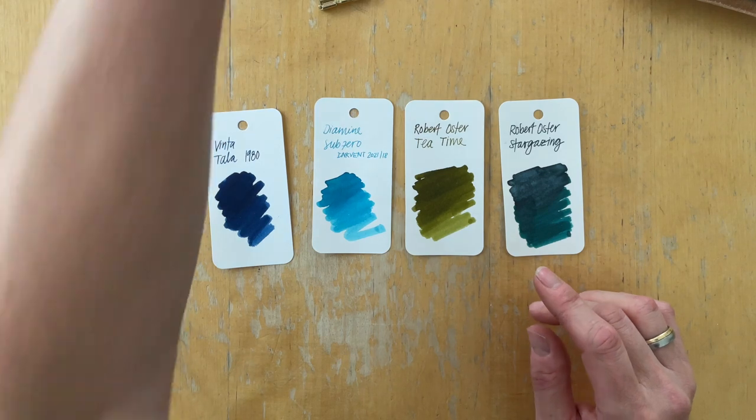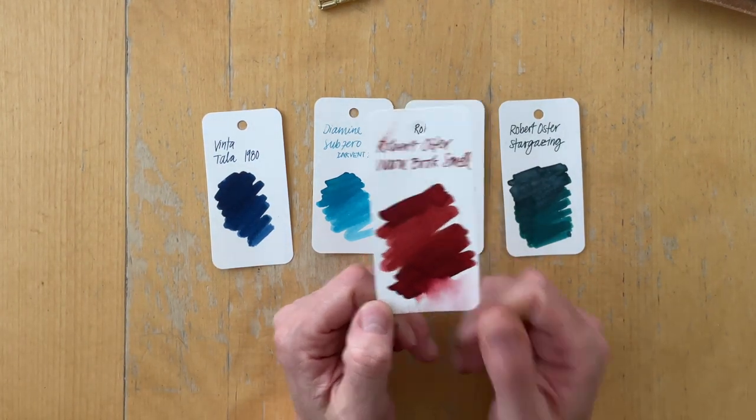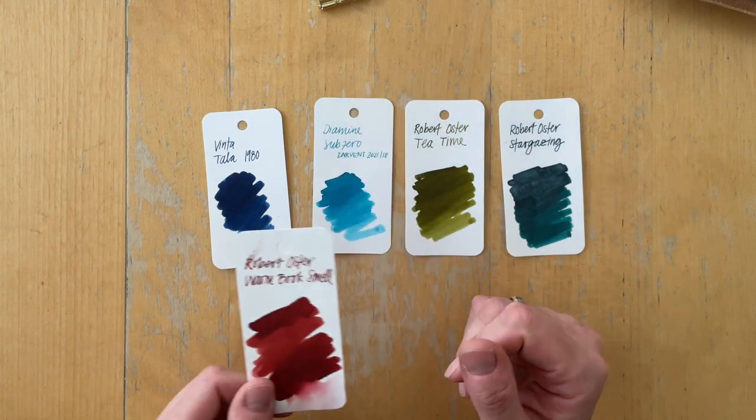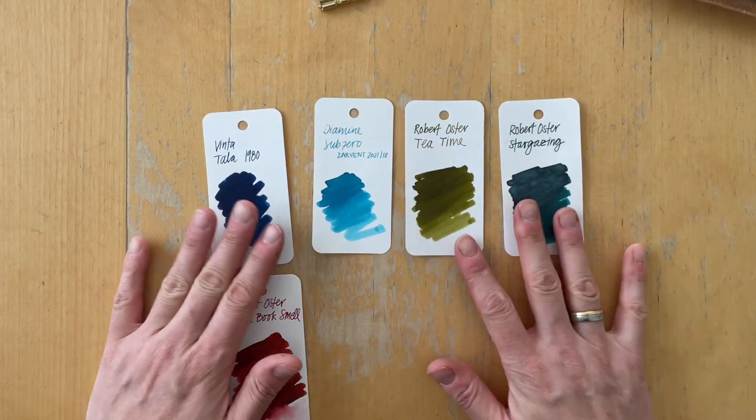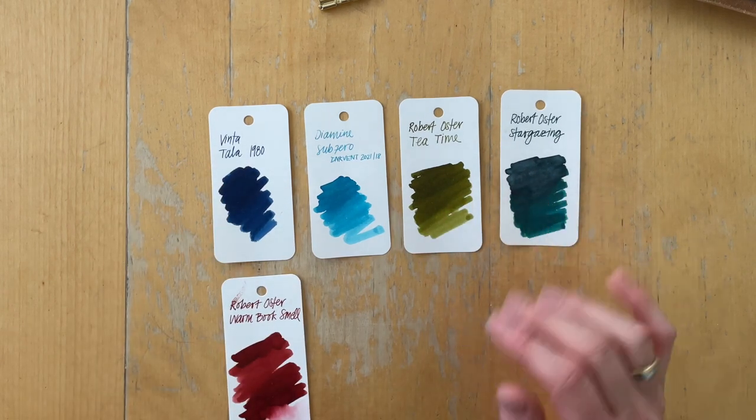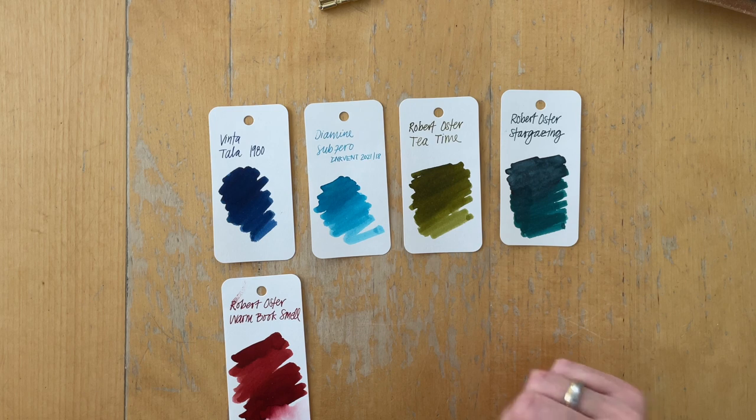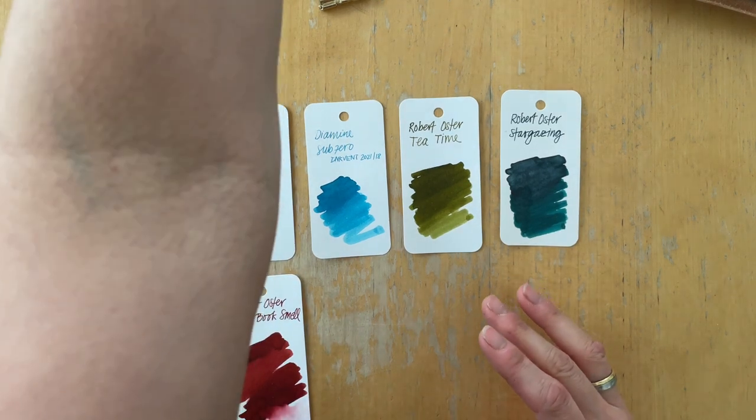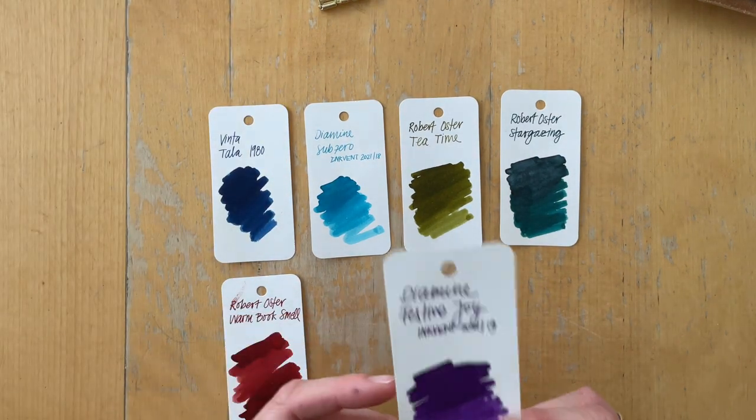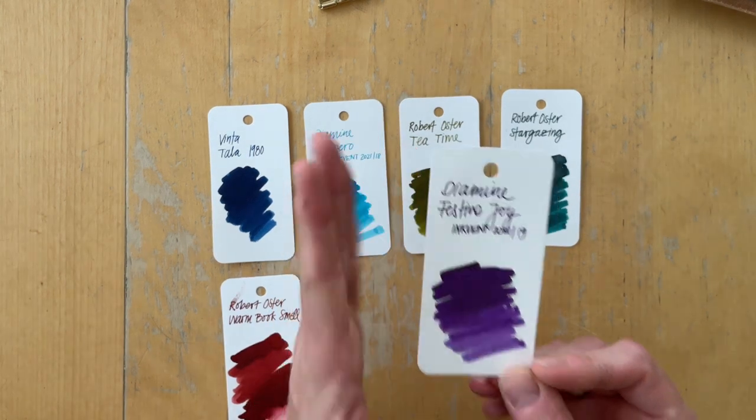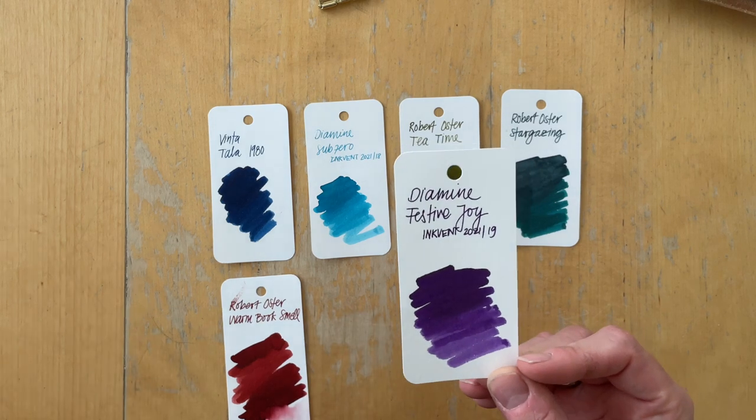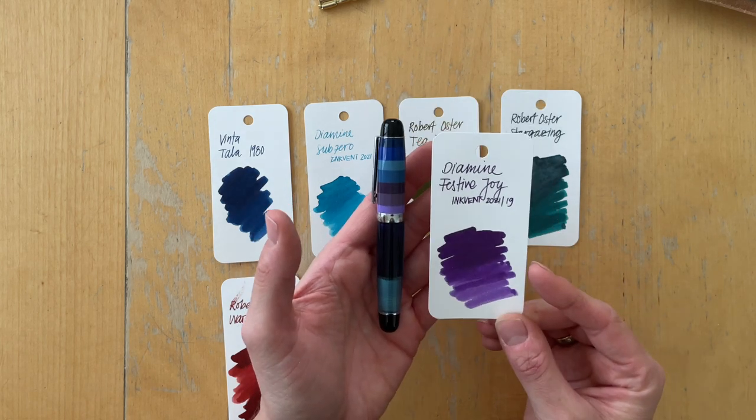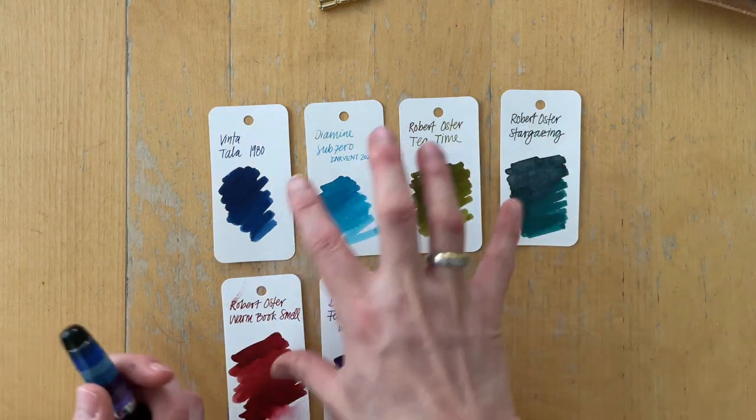And then I also had a new pen in the beginning of June that was inked. I think I spoke about this last time, with warm book smell, old book smell from Robert Oster. So that was quite dark. And so I knew that I wanted to add more vibrant colors, lighter colors. And so when I received my new pen, the Opus 88 pocket, I decided this ink really will work well with the fountain pen, the color is represented in the fountain pen. So I thought this was a good match. So these were all set.